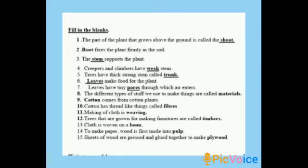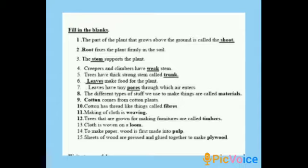Eighth: the different types of stuff we use to make things are called materials. Ninth: cotton comes from the cotton plant. Tenth: cotton has thread-like things called fibers. Eleventh: making of cloth is called weaving. Twelfth: trees that are grown for making furniture are called timbers.